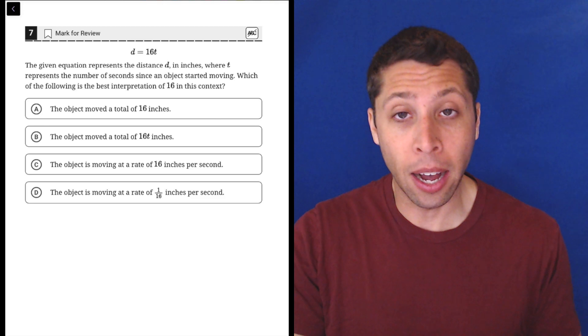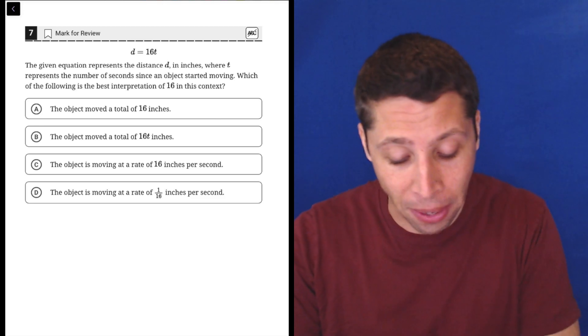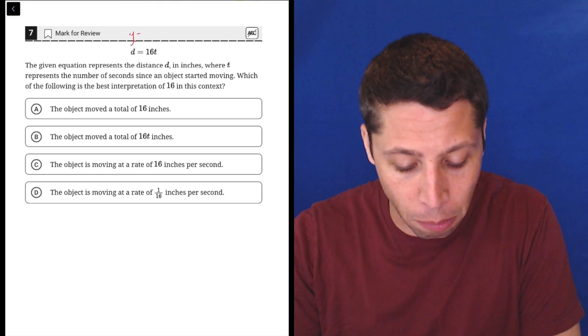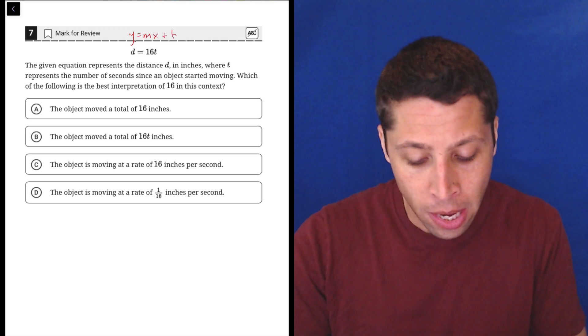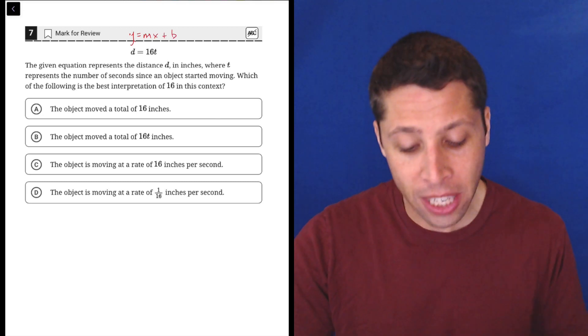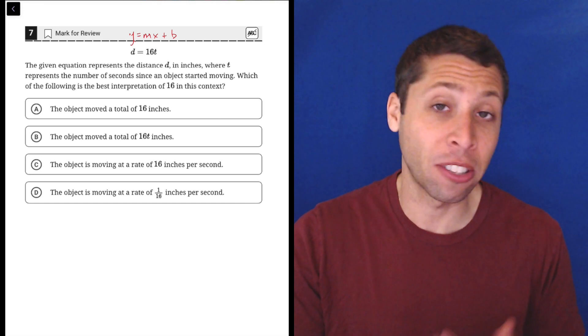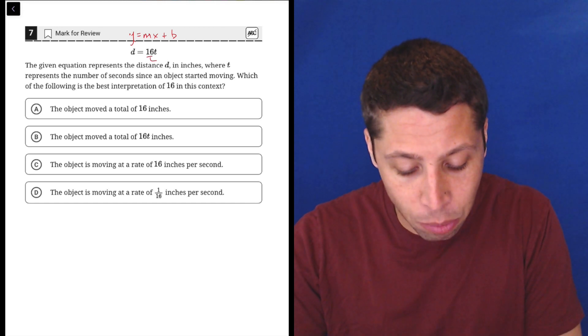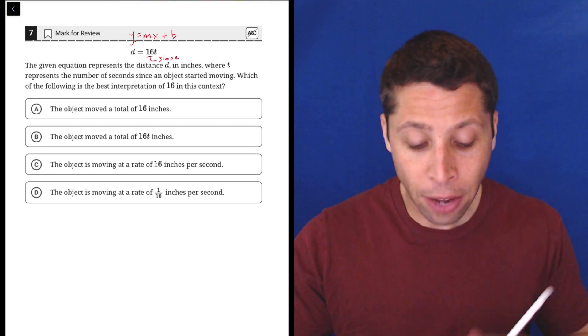Lines on the SAT are very common and they pretty much always take the form of Y equals MX plus B. So we have a Y coordinate which is our D, our X coordinate which is T, and then M represents the slope of the line and that's what this 16 is.